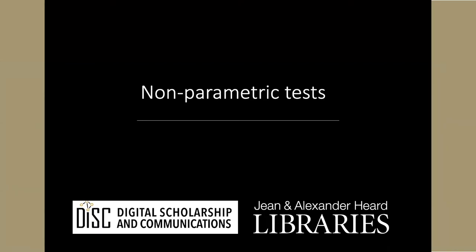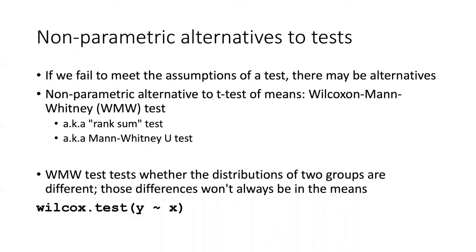For most statistical tests that are parametric tests, there is an alternate test suitable for the same kind of data called a non-parametric test. A non-parametric test is a test that you use for data that are not normally distributed or that don't meet the typical requirements for parametric tests.